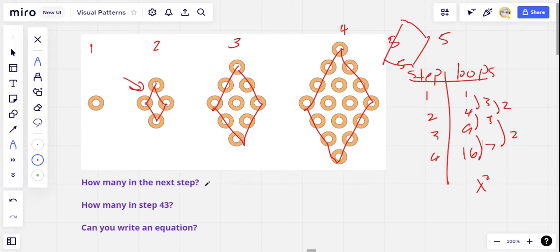So I think in step five we're going to have 25 of these loops. And I don't think there's anything else we need to do to it for our equation. The step number squared is the number of loops there, so our equation would be y equals x squared. And that works out: one squared is one, two squared is four, three squared is nine, five squared, what we're predicting in step five, is 25. So all of that works out.